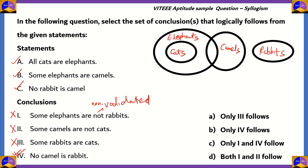We can safely say that option B, only 4 follows, is the correct answer. Option A says only 3 follows, whereas we know that is not validated. Option C says 1 and 4 follow, but conclusion 1 is not validated. Option D says both 1 and 2 follow, which is also not validated. The correct option is B — only conclusion 4, that is, no camel is a rabbit, follows from the given statements.